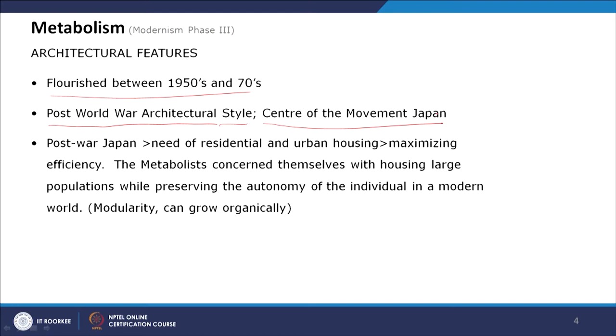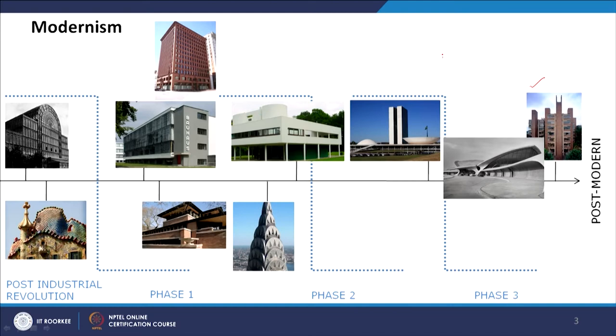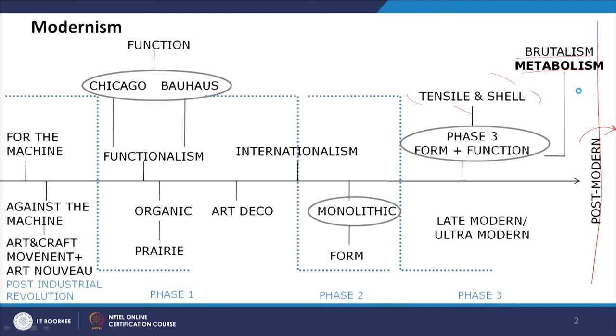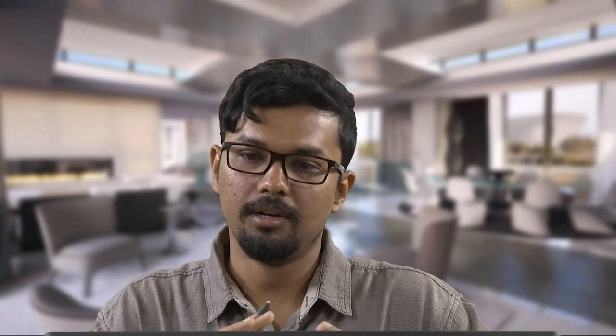Many post-World War II architectural styles emerged in Phase 3. Tensile and shell structures, brutalism, and metabolism are all post-war styles ranging roughly from the 1950s to the 1970s. During the World War there was economic and social crisis, so movements like functionalism and internationalism characterized that era. Post-war architecture was very different because the socio-cultural context, financial structure, and requirements were very different.